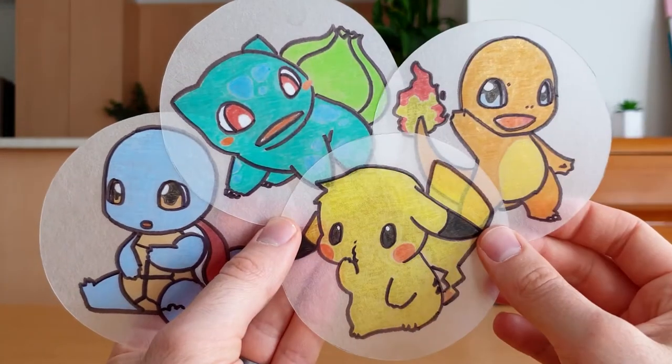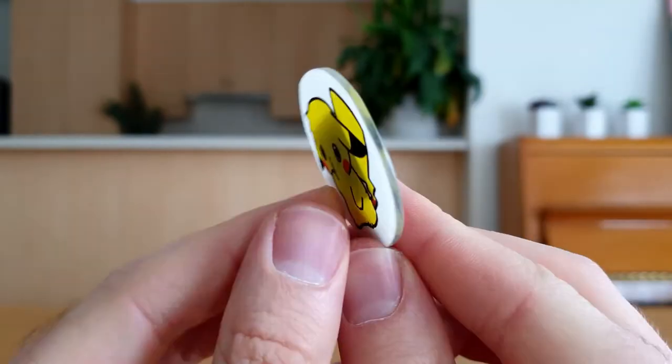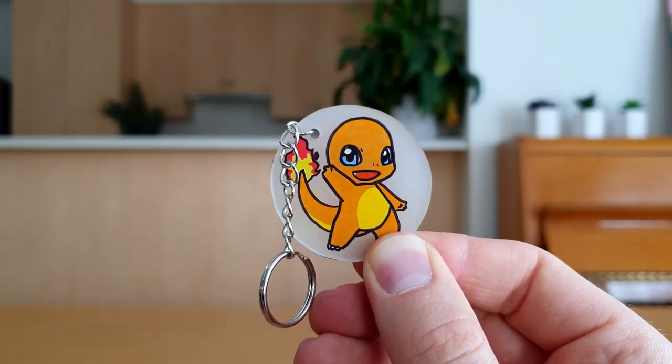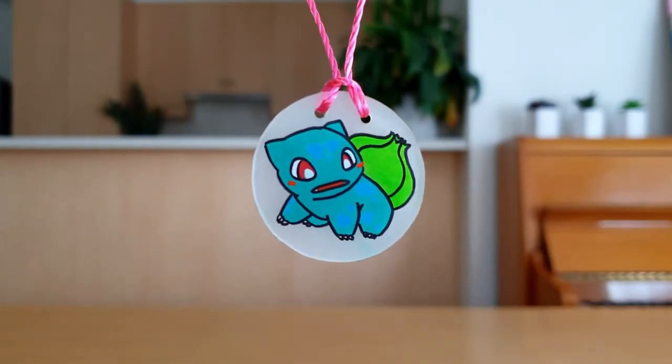This is shrinking plastic. It can be turned into fridge magnets, key rings, necklaces and pins.